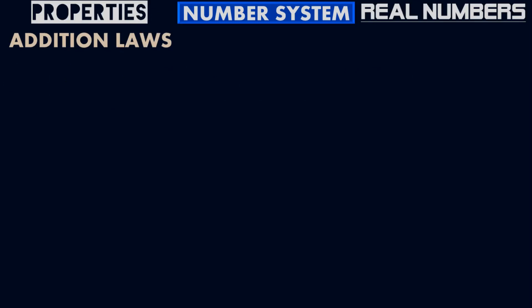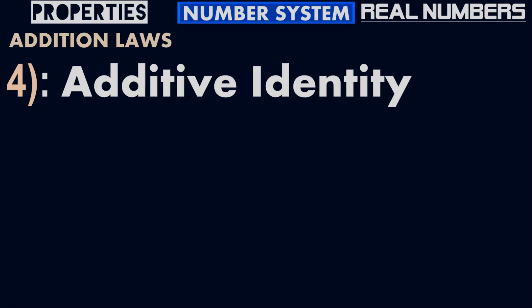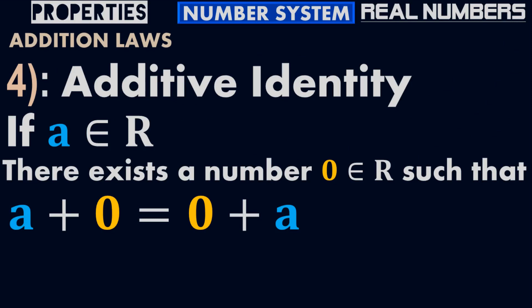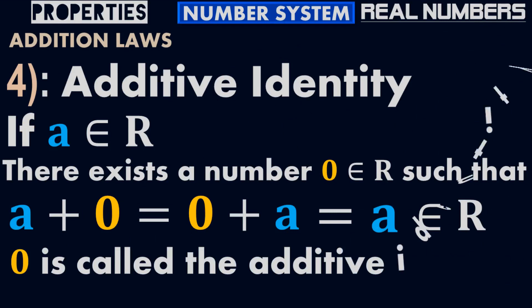Property number four is the additive identity. If A belongs to the real numbers, then there exists a number 0 that also belongs to the real numbers, such that A plus 0 equals 0 plus A equals A. So 0 is called the additive identity.